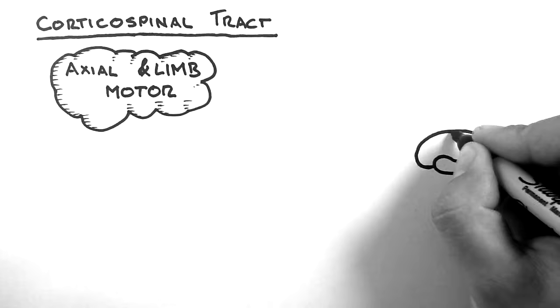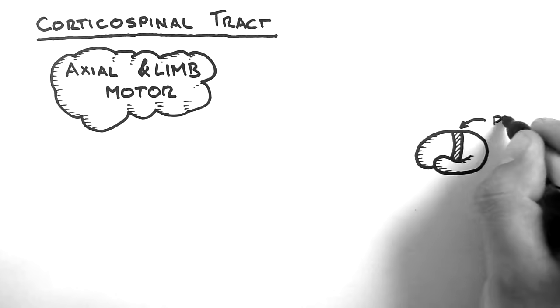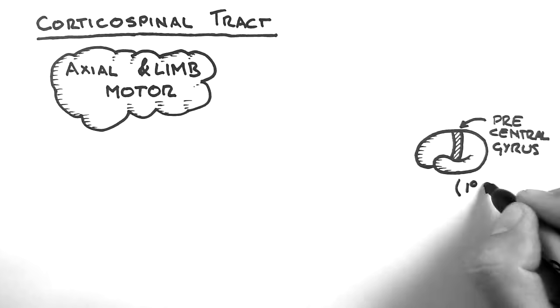So, this pathway begins in the precentral gyrus, which is the primary motor cortex.